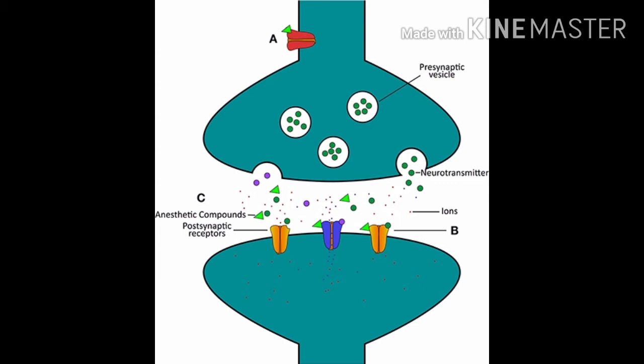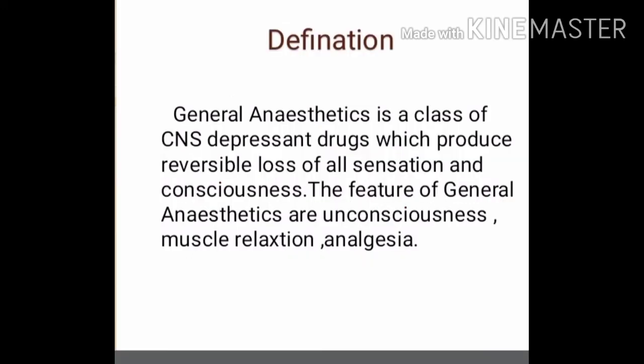Excitation of pyramidal cells helps to maintain consciousness, whereas the degree of inhibition or excitation of stellate cells determines the overall activity level of the pyramidal cells with which they synapse. As the concentration of the anesthetic agent increases in the brain, the degree of overall neural depression also increases, resulting in progressively deeper stages of anesthesia.